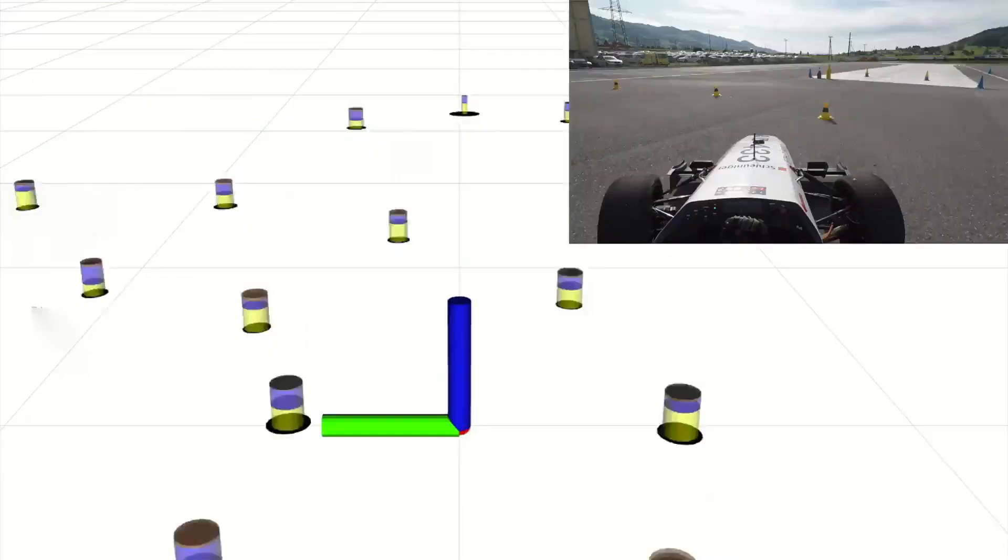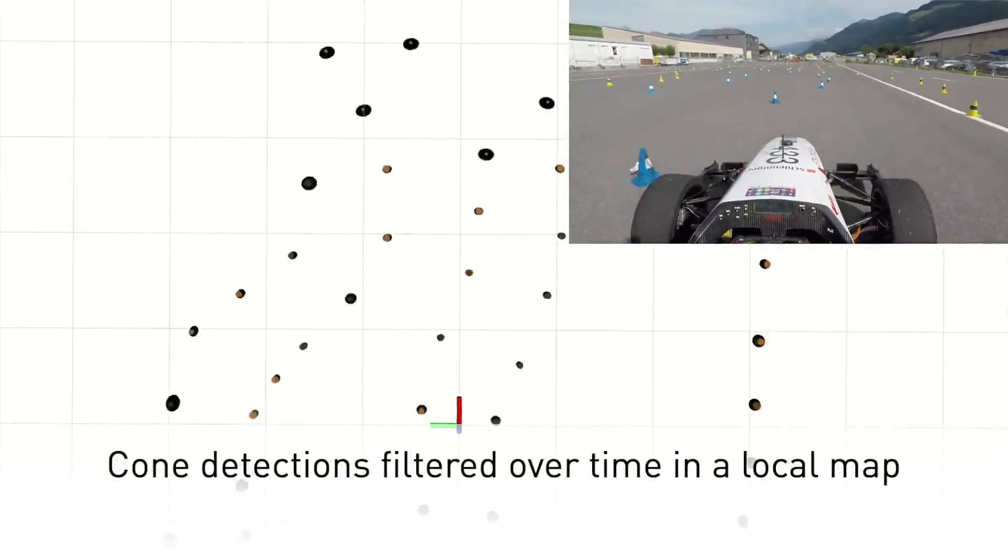Observations are filtered over time in a map representing the local environment around the car. The best middle path is selected using Bayesian inference from a pool of candidate paths that are generated from Delaunay's triangulation.